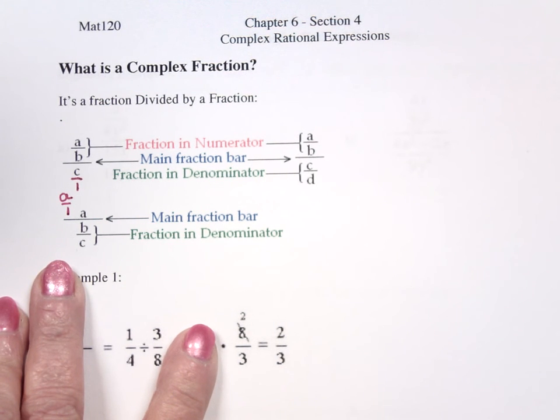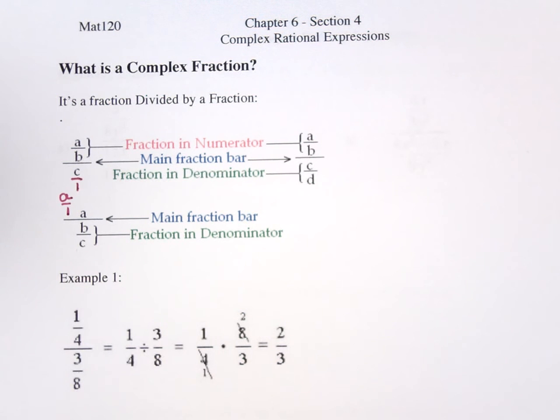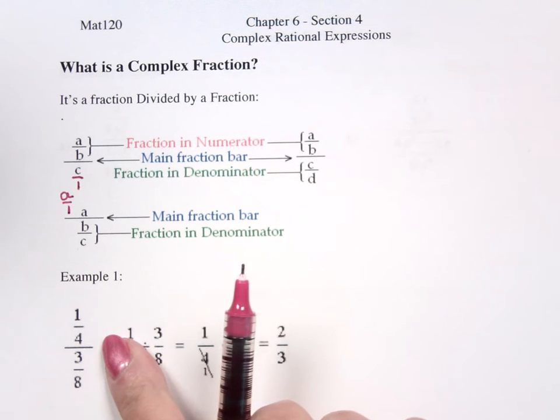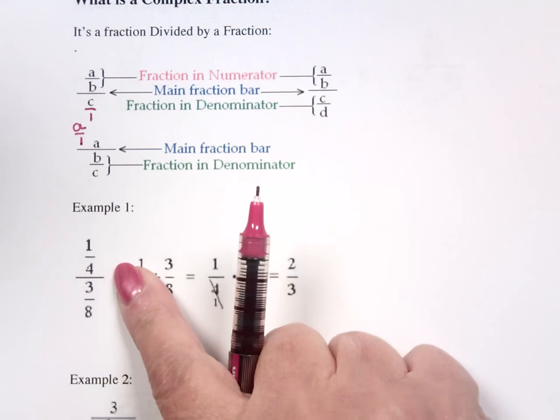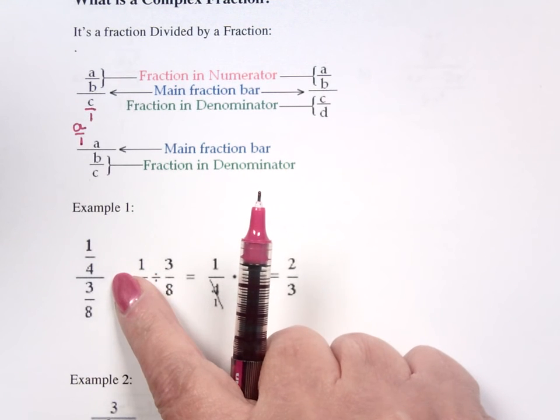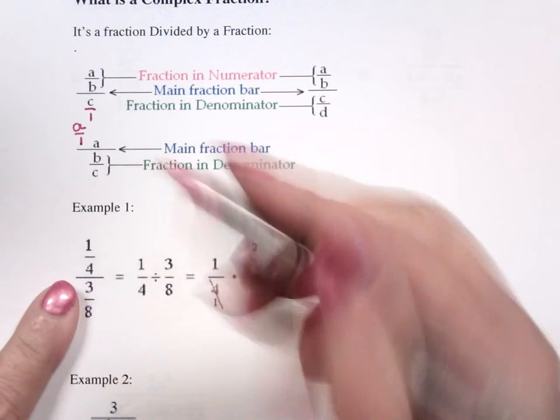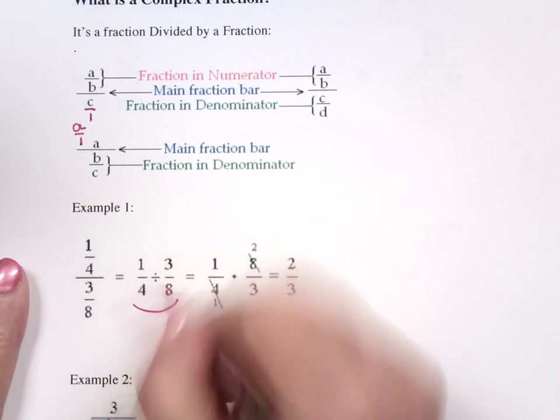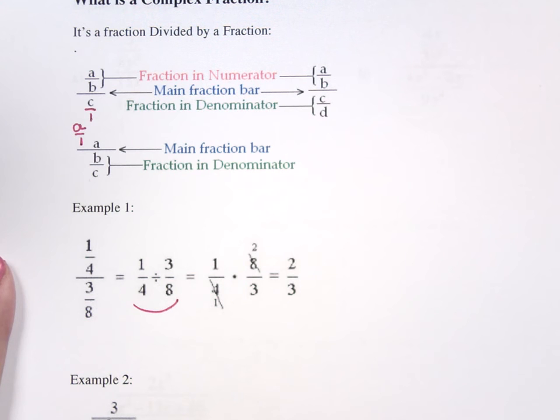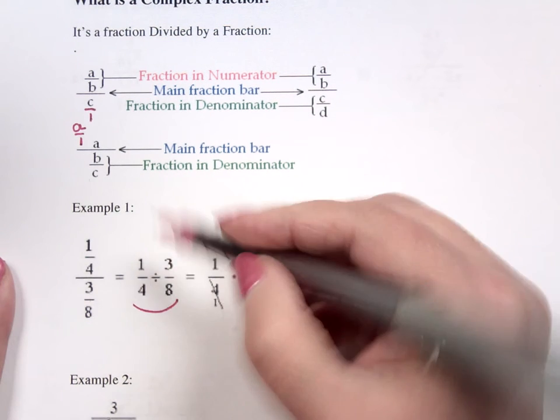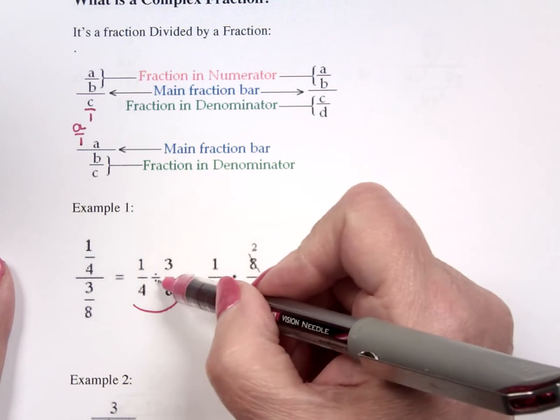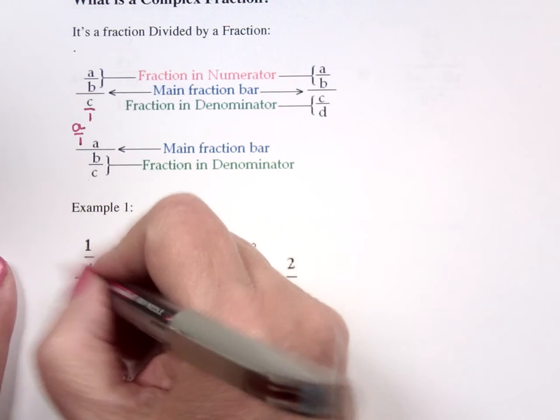I tend to put denominators in. Now, this is a complex fraction. It's a complex fraction. You're not used to seeing it that way. This is how you're used to seeing it in arithmetic. But this says 1 fourth divided by 3 eighths. That's what this says.